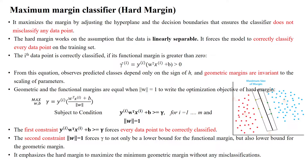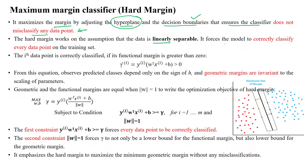Welcome to Hard Margin — another name is the Maximum Margin Classifier. This maximum margin classifier maximizes the margin by adjusting the hyperplane and its decision boundaries — the negative hyperplane and positive hyperplane — and the decision boundary ensures the classifier does not misclassify any data point. For this, we must ensure the given dataset is linearly separable.